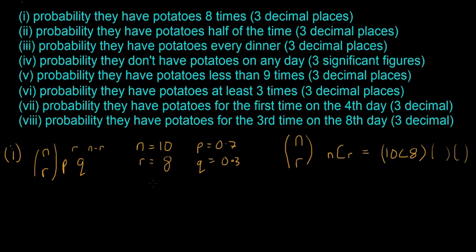So what you do is put all of those numbers in together. So if I were to write it out it would be 10 choose 8, and it would be p which is 0.7 to the power of 8, and then it would be 0.3 to the power of 2 because 10 minus 8 is going to be 2. Stick all that into your calculator, they want it to 3 decimal places, and that will give us the answer of 0.233. So that's the probability that they have potatoes 8 times out of their 10 dinners.